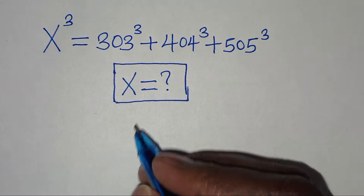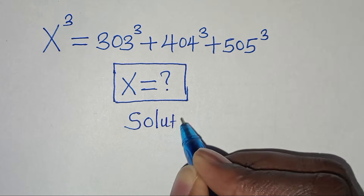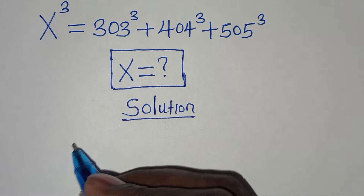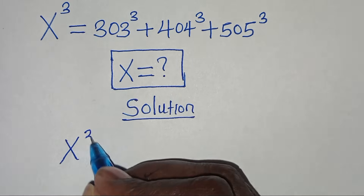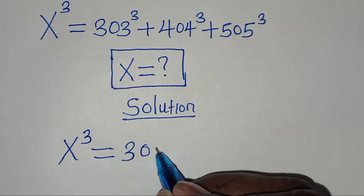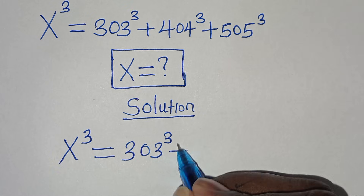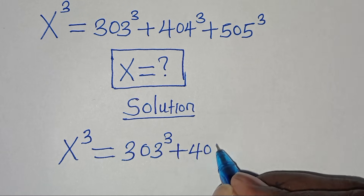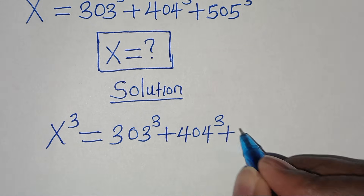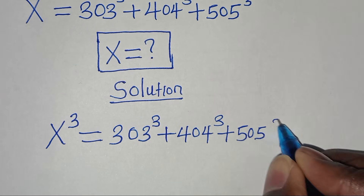Now, let's provide a solution. We have x to the power of 3, this is equal to 33 raised to the power of 3, plus 44 raised to the power of 3, then plus 55 raised to the power of 3.